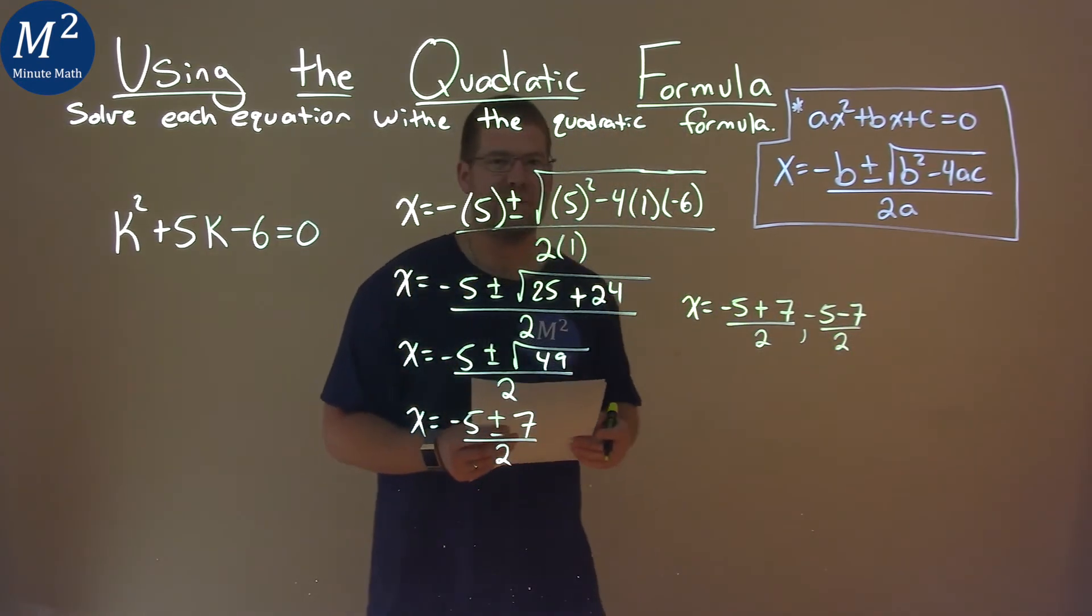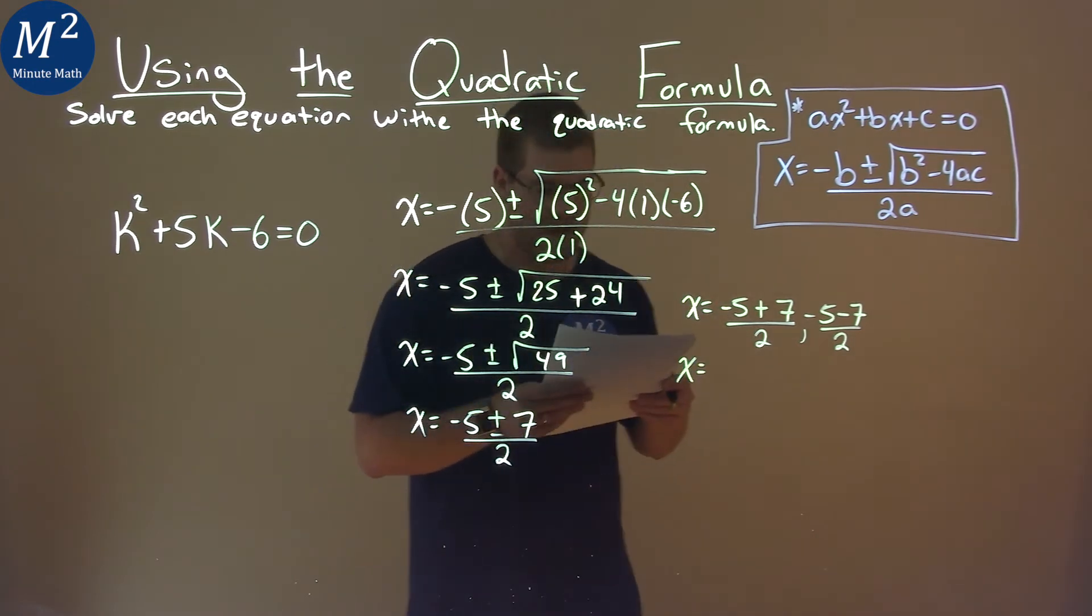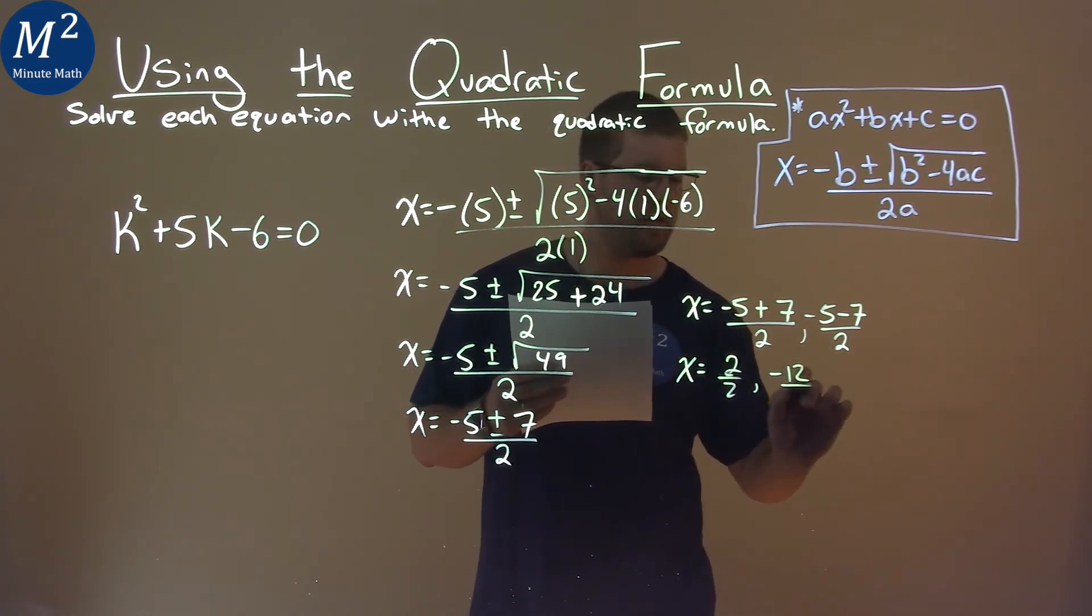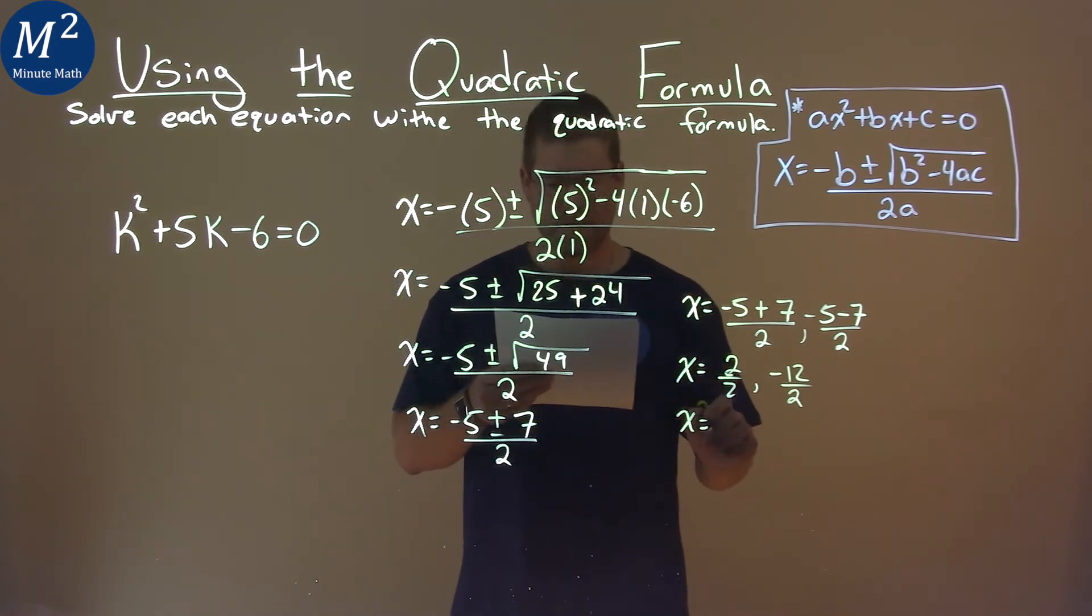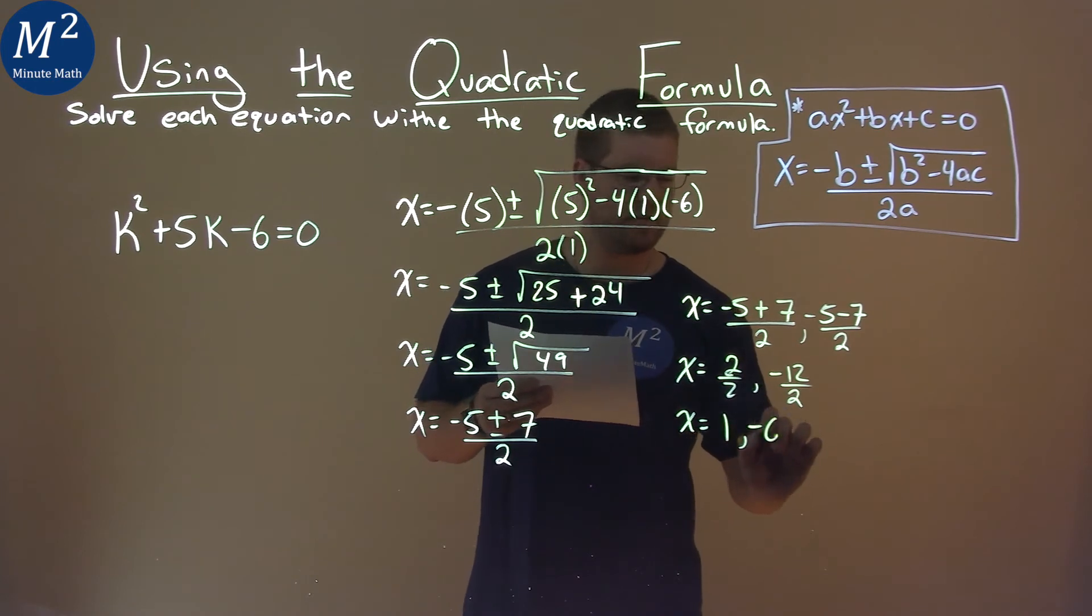Let's solve each one individually. So x equals - when negative 5 plus 7 is positive 2 over 2, and negative 5 minus 7 is negative 12 over 2. Keep going, simplify this: 2 divided by 2 is 1, and negative 12 divided by 2 is negative 6.